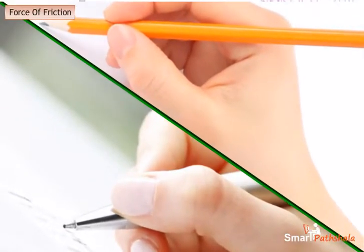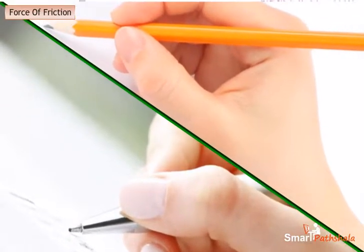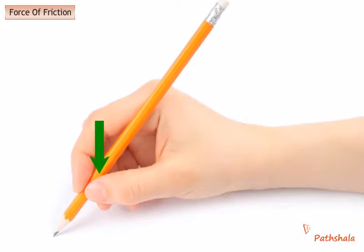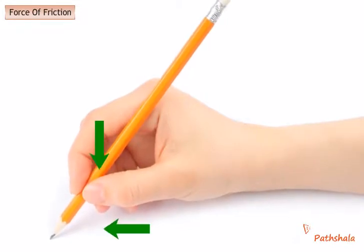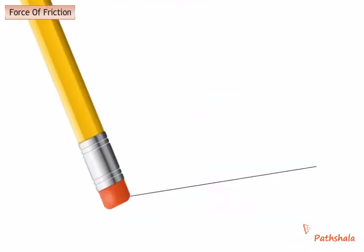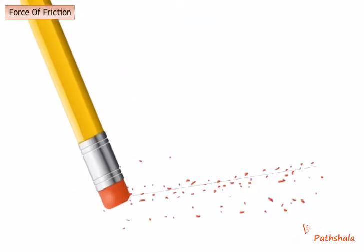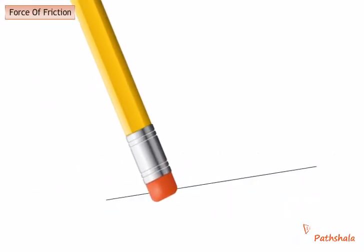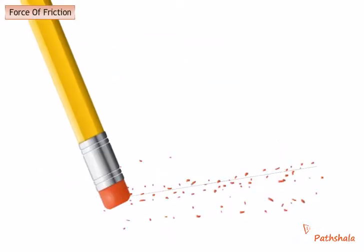Friction is also very important for writing with a pen or pencil. You could not hold a pencil in your hand without friction, and the pencil lead would not make a mark on the paper without friction. A pencil eraser uses friction to rub off mistakes written with pencil lead.